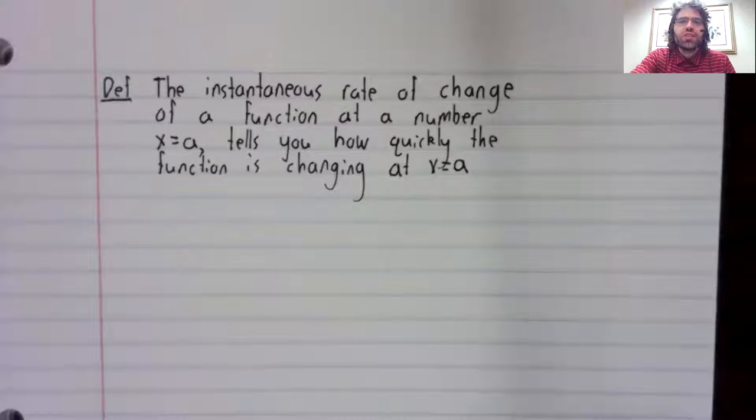When you state the definition of the instantaneous rate of change, it sounds so trivial that it's almost circular. The instantaneous rate of change of a function at a value, x equals a, tells you how quickly the function is changing at that value, at x equals a.